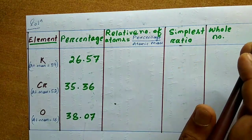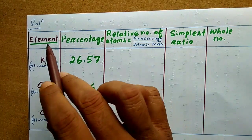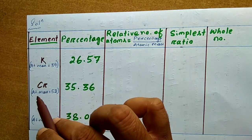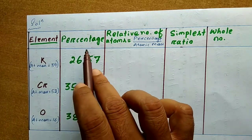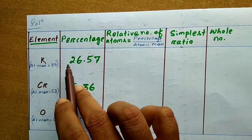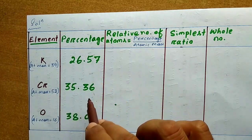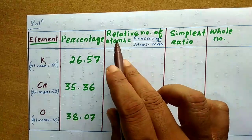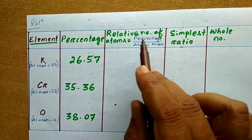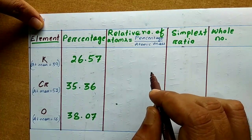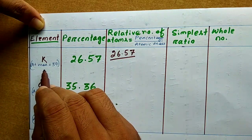I will explain this problem in a table so that it will be easy for everyone to understand. Draw a table with columns for elements, atomic mass, percentage, and relative number of atoms. The elements are potassium, chromium, and oxygen. The percentages given are: potassium 26.57, chromium 35.36, and oxygen 38.07. To calculate the relative number of atoms, the formula is: percentage divided by atomic mass. The first one is 26.57 divided by 39.